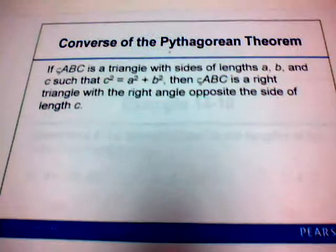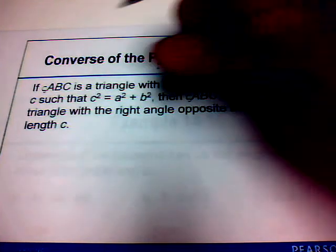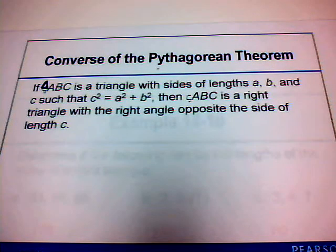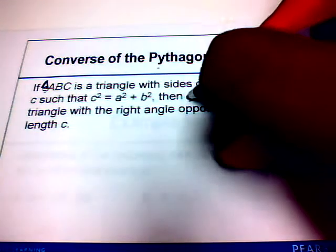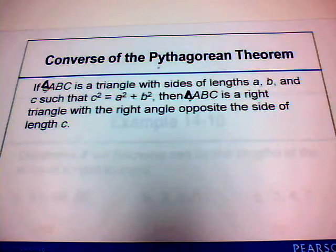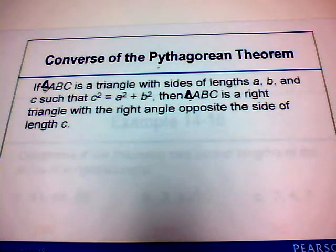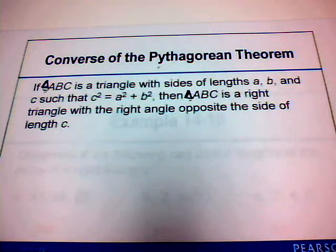Next is the converse of the Pythagorean Theorem. If triangle ABC has sides of lengths A, B, and C such that C squared equals A squared plus B squared, then triangle ABC is a right triangle with the right angle opposite the side of length C, since C is always the longest side — your hypotenuse. So if the square of the longest side equals the sum of the squares of the other two sides, that triangle is a right triangle.